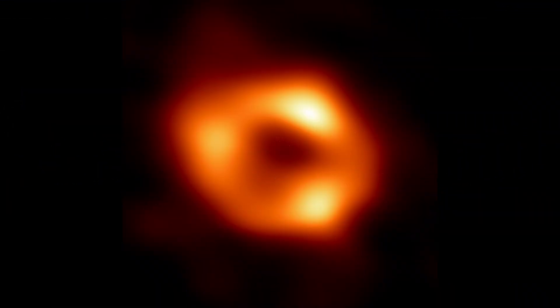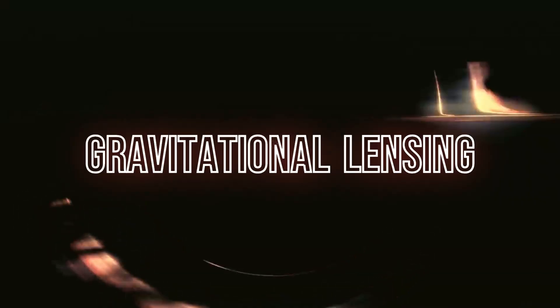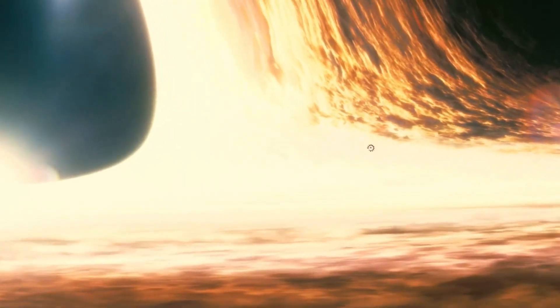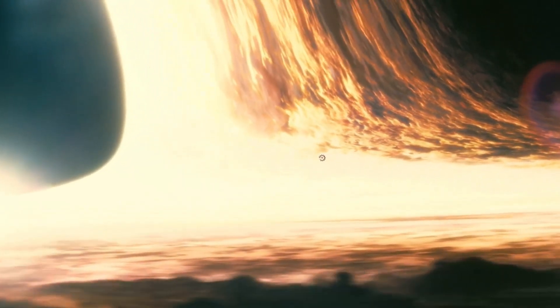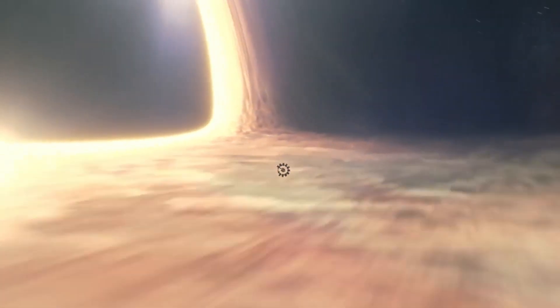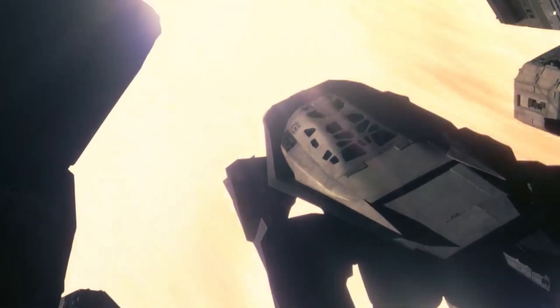Another fascinating phenomenon that supports the existence of black holes is gravitational lensing. When light from a distant object passes near a black hole, its path is bent, creating a distorted image. This effect has been observed and confirmed through various telescopes and space missions.